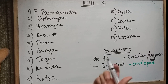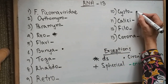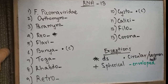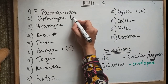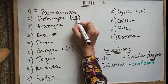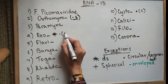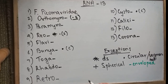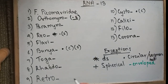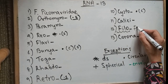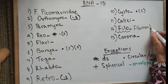Moving on to circular or segmented: Bunyaviridae is circular and segmented. Orthomyxo is linear and segmented, which is why we've kept the dot and the S in the same bracket. Reo is only segmented. Cysto is circular. Retro is linear and segmented. Filo is filamentous — it is neither circular, nor linear, nor segmented, but filamentous.